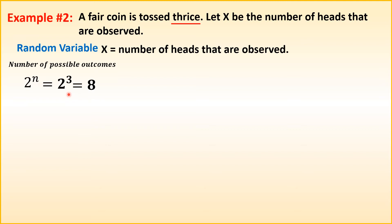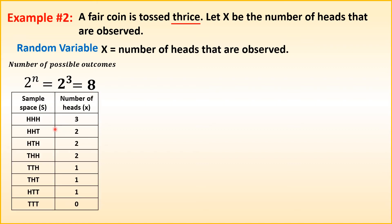The 8 possible outcomes are: HHH, HHT, HTH, THH, HTT, THT, TTH, and TTT. The number of heads for each outcome: 3, 2, 2, 2, 1, 1, 1, and 0. Now let's build the discrete probability distribution table.